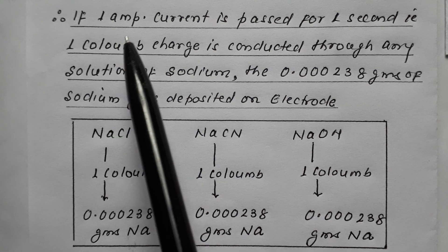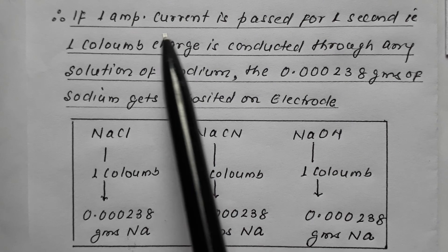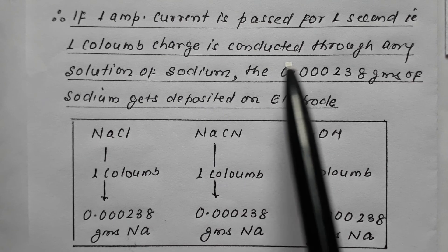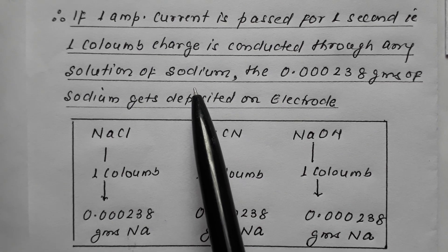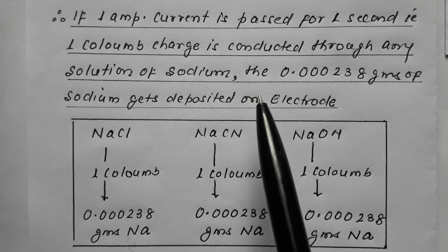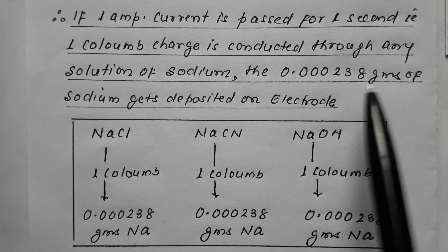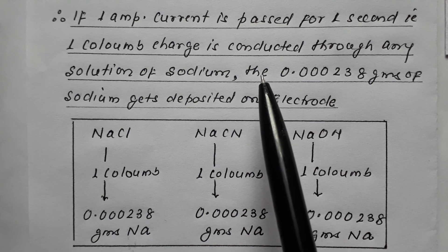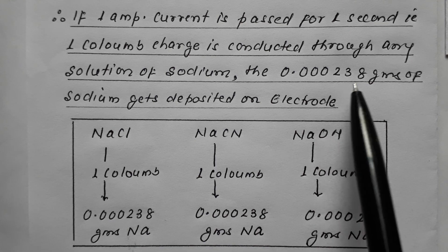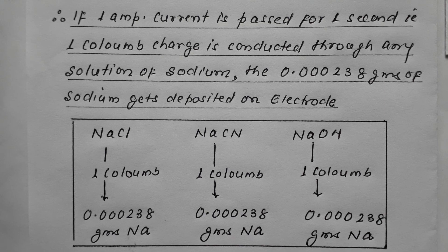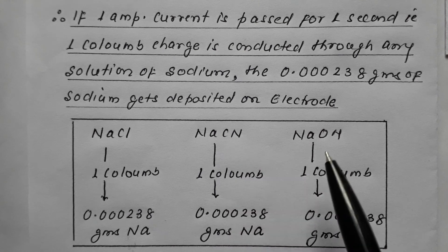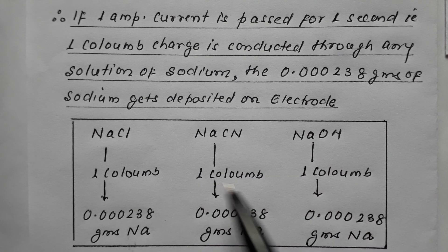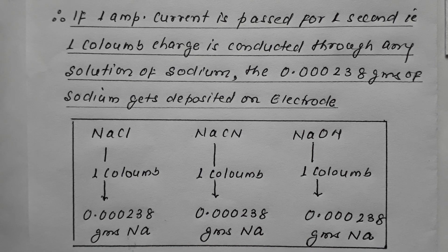So if one ampere current is passed for one second — that is, when one coulomb of charge is conducted through any sodium solution, whether it is sodium chloride, sodium cyanide, or sodium hydroxide — 0.000238 grams of sodium gets deposited on the electrode. The weight of sodium deposited is the same in all three cases because all the compounds are sodium compounds.